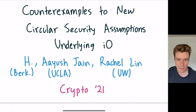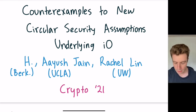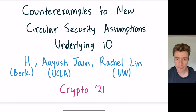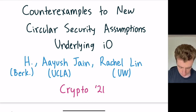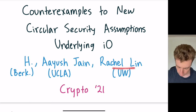This talk is on counterexamples to new circular security assumptions underlying indistinguishability obfuscation. It's joint work by me, Sam Hopkins, Ayush Jain, and Rachel Lin.